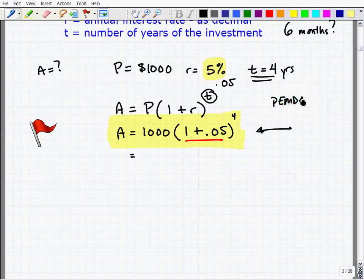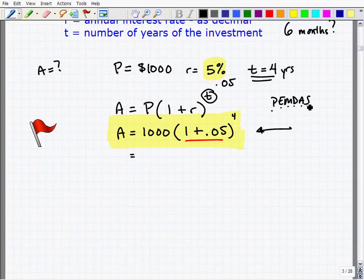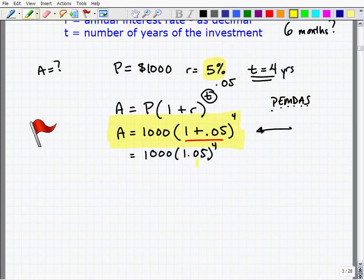So this is where students will mess up. I'll show you where they most often go wrong. You have to do what's inside the parentheses first. So we have to add 1 plus 0.05, and we get 1.05 to the fourth power. Now here is where a lot of students seem to go wrong. They multiply 1,000 times 1.05, and then they take that to the fourth power.